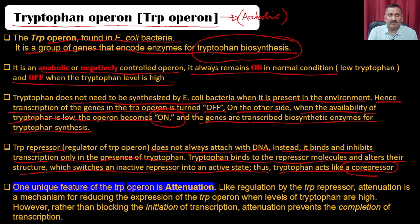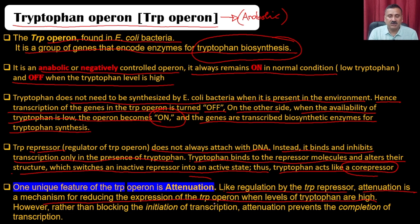One unique feature of the tryptophan operon is attenuation. Like regulation by the tryptophan repressor, attenuation is a mechanism for reducing the expression of tryptophan genes when tryptophan levels are high. However, rather than blocking the initiation of transcription, attenuation prevents the completion of transcription — a very unique feature of the tryptophan operon.